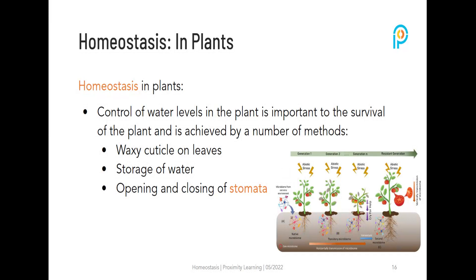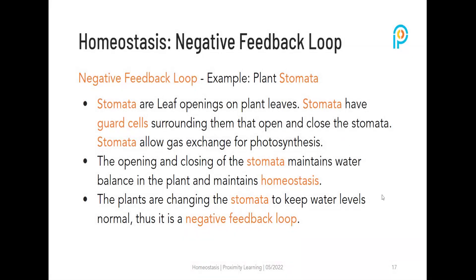We've talked about homeostasis in humans — now let's talk about homeostasis in plants. This involves the control of water levels in the plant, achieved by the waxy cuticle on leaves, the storage of water, and the opening and closing of stomata. As a negative feedback loop example: stomata are leaf openings on plant leaves with guard cells surrounding them that open and close the stomata, allowing gas exchange for photosynthesis. The opening and closing of stomata maintains water balance, maintaining homeostasis.